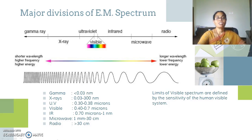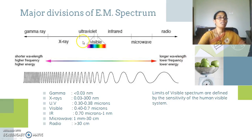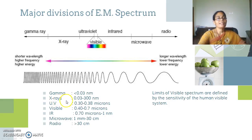Let's have a look at the major divisions of the electromagnetic spectrum. Here comes the visible region; next to the visible region we have ultraviolet, and towards the right we have infrared, microwave, and radio wave frequencies over the long wavelength region having low frequency. Towards the left in the shorter wavelength, higher frequency region, we have X-rays and gamma rays. The visible region ranges from 0.5 to 0.7 microns, whereas the UV region ranges from 0.3 to 0.38 microns. X-rays range from 0.03 to 300 nanometers and gamma rays are less than 0.03 nanometers.